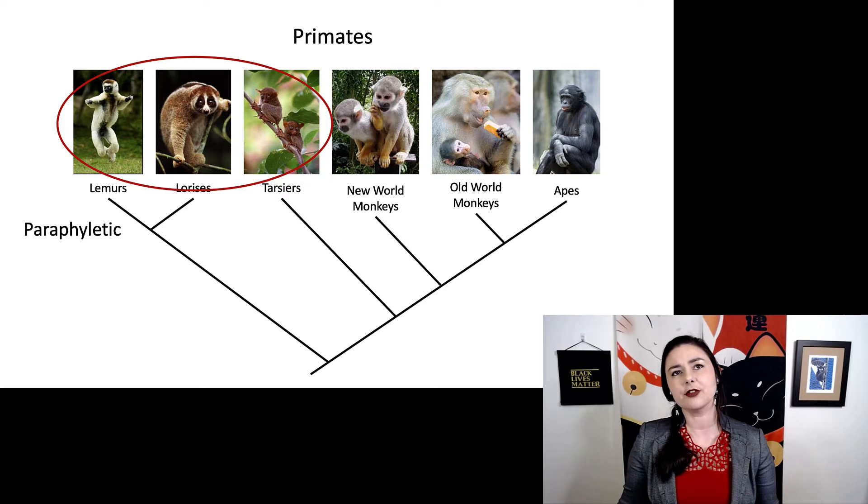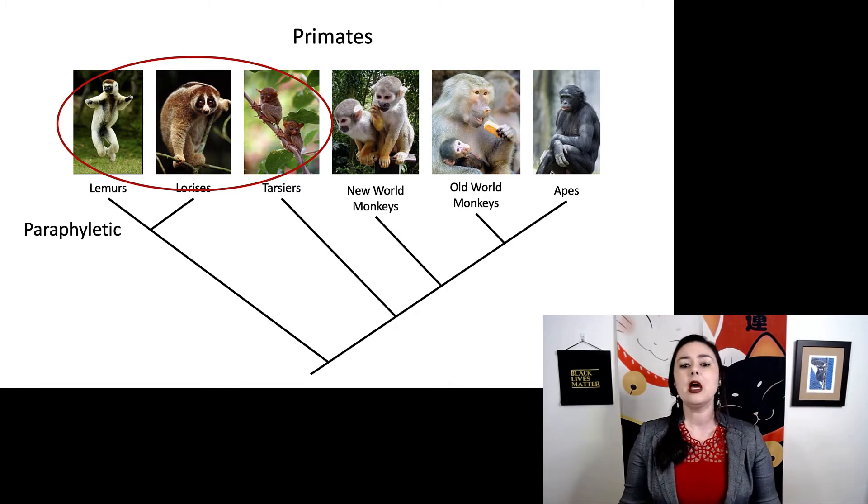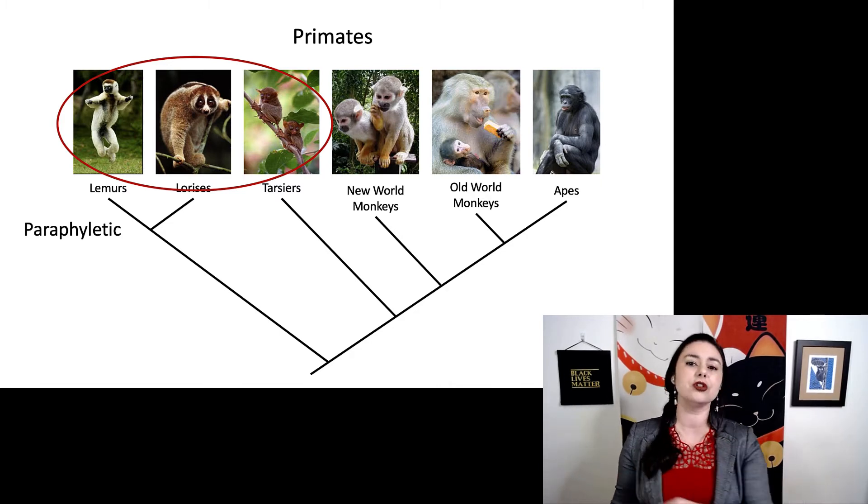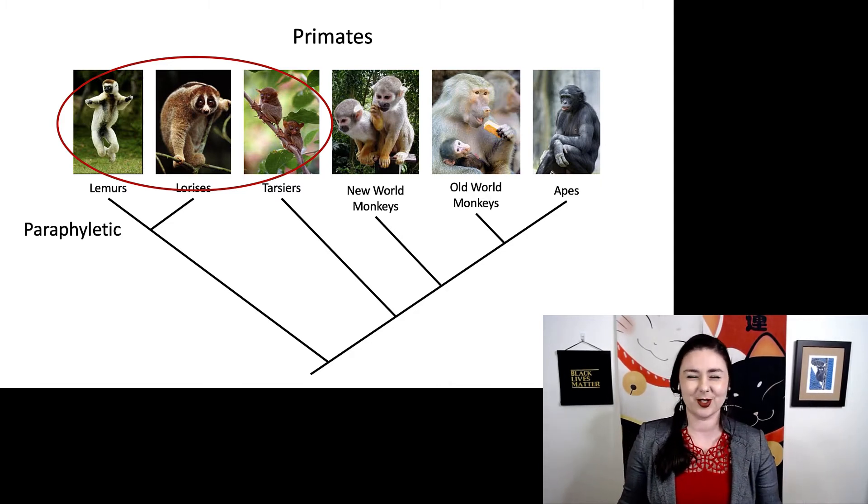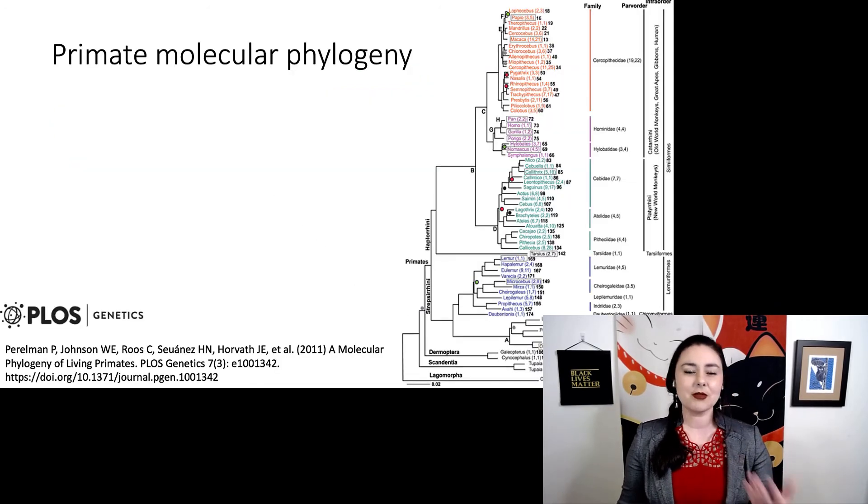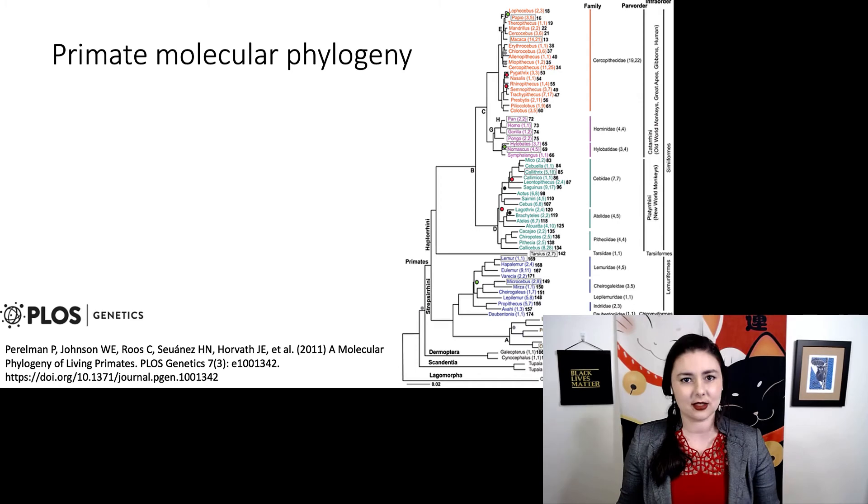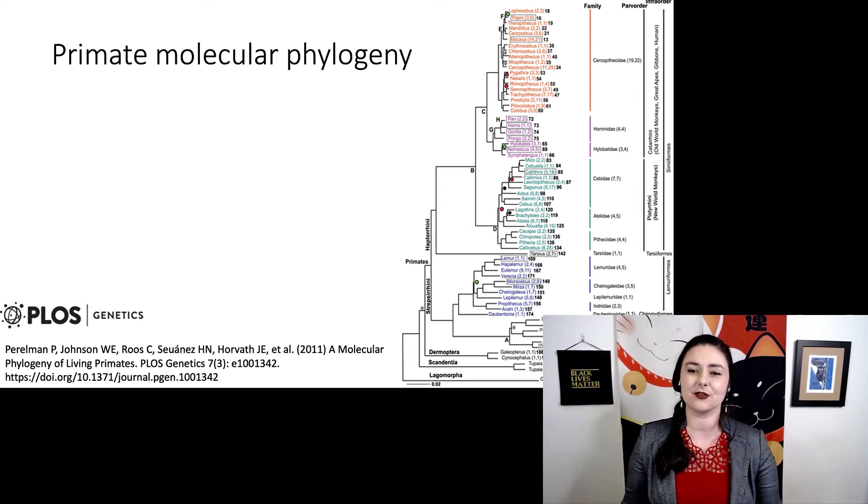Sometimes the differences between polyphyletic and paraphyletic can be a little bit subjective based on what you're considering. But here we've basically just excluded all of our anthropoids on this tree. We use these ideas when we're looking at taxonomy because we want to make sure that we're using those monophyletic groups as the basis for our taxonomy here.